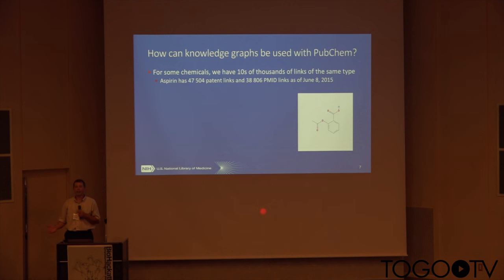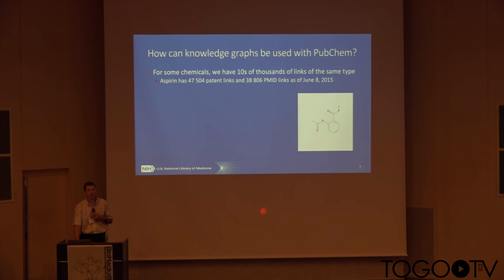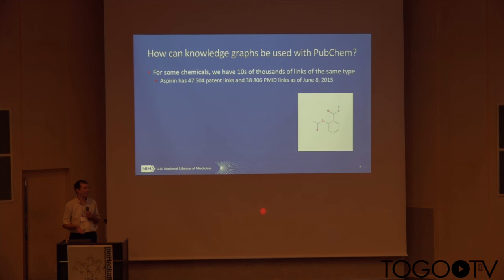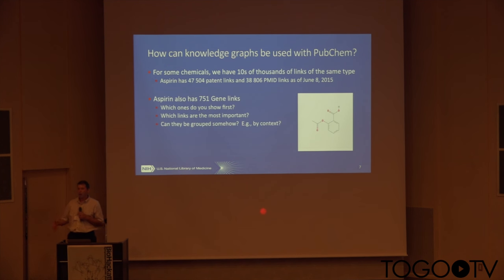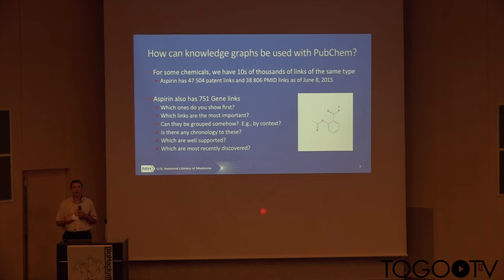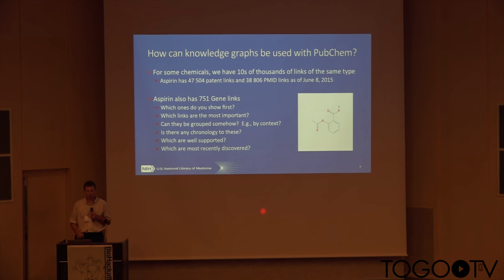Take a record like Aspirin — very well understood. We have tens of thousands of links to patents and tens of thousands of publications. It's not enough to say here are 38,000 publications for Aspirin — as a human, you can't digest what's inside that collection. We're trying to get down to what is actually known. We have 750 gene links to Aspirin — but what does that mean? Is there a chronology? Which are well-known versus suggested or uncertain associations? Which are the most recently discovered? How do you do deltas on these types of graphs?